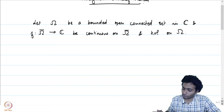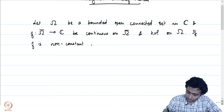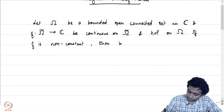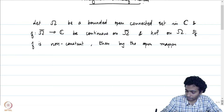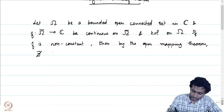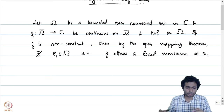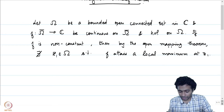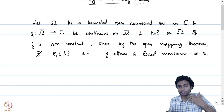Now, if F is non-constant, F being a holomorphic function on omega and the open mapping theorem tells us that there does not exist z1 in omega such that F attains a local maximum at z1. This is something we discussed earlier in one of the problem sessions. Because it is an open mapping, there will be a ball around z1 contained in F(omega), and therefore you can find some z2 with |F(z2)| > |F(z1)|, so it cannot have a local maximum.